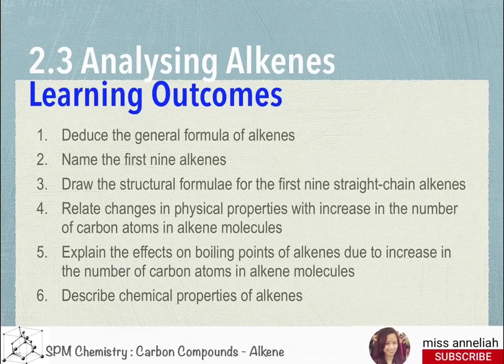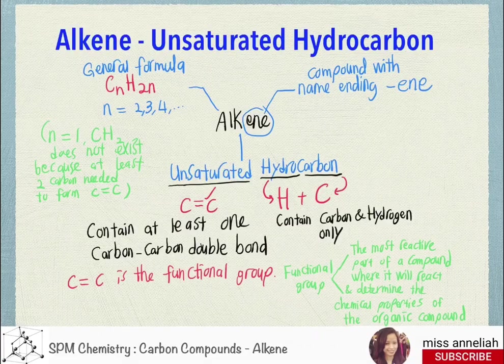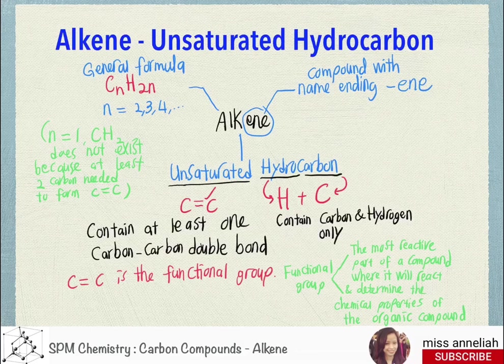6. Describe the chemical properties of alkenes. Alkenes are unsaturated hydrocarbons — unsaturated because alkenes contain at least one carbon-carbon double bond. The carbon-carbon double bond is the functional group of alkenes.